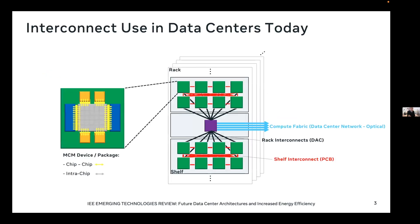Starting off, I wanted to level set and talk about how we use interconnects in data centers today. This is a very simplified cartoon diagram of where we see these different classes of interconnects. On the left-hand side, I'm showing a cartoon drawing of a multi-chip package that we might see today. The interconnects of interest within this package might be things that are intra-chip, shown by gray arrows within a piece of CMOS, and also chip-to-chip — the yellow interfaces — which have various classes between the big die and the smaller chiplet die.